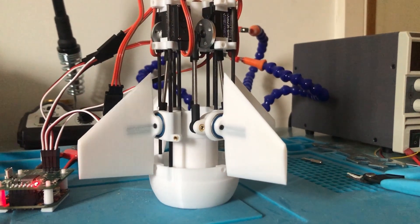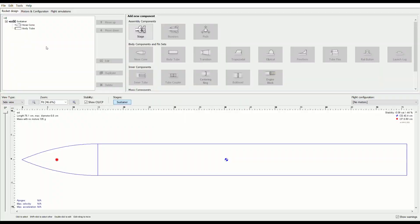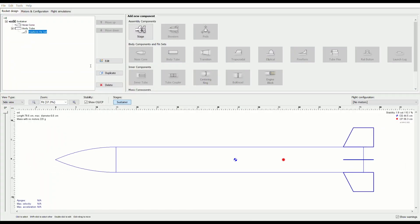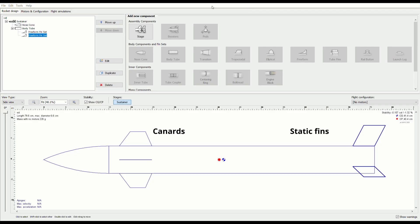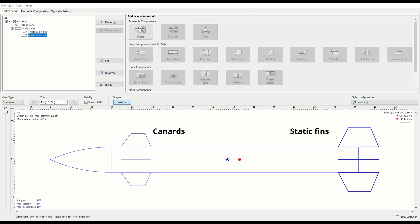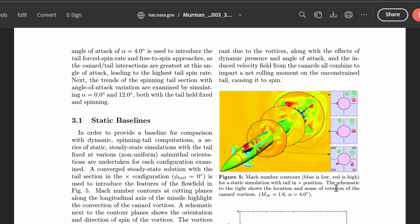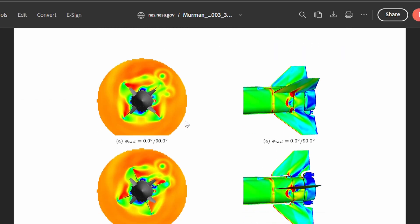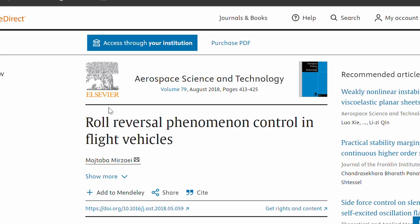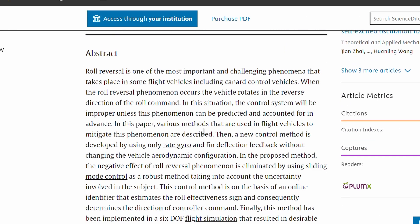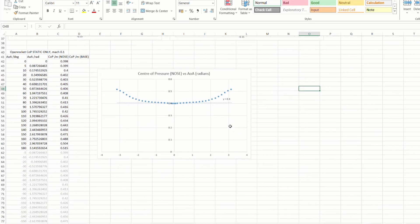I decided to place my control fins at the aft of the rocket for several reasons. Firstly, a set of canards at the front of the vehicle would induce instability which would need to be counteracted by a much larger set of static fins at the rear. The second reason was that, from what I understand, vortices produced by deflected canards interact with the rear fins, which can induce some complex aerodynamic effects such as the roll reversal phenomenon. Since I had no prior experience with aerodynamics and CFD, this was enough to deter me from using this approach.